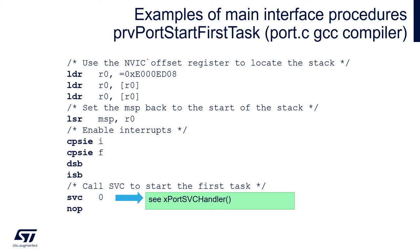At the beginning, the scheduler needs to locate the beginning of the stack and load it to the stack pointer register - in this case, the main stack pointer. The beginning of the stack in Cortex-M based devices always starts at the beginning of the vector table. As this core allows us to relocate the vector table, we need to check where it is. This is why the scheduler needs to perform the following list of operations.